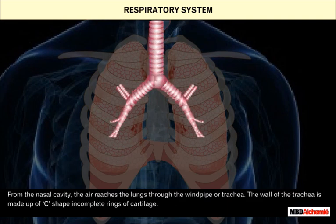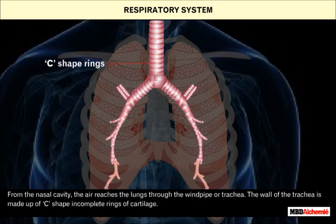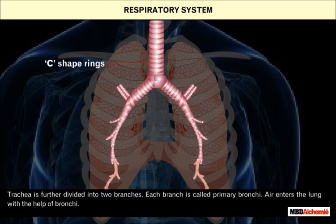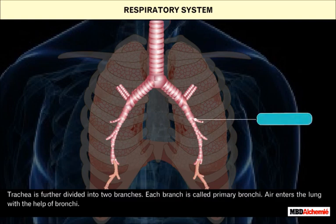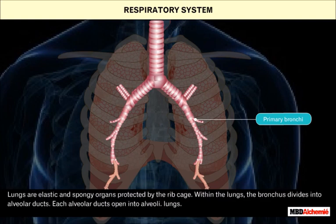The wall of the trachea is made up of C-shaped incomplete rings of cartilage. The trachea is further divided into two branches; each branch is called a primary bronchus. Air enters the lungs with the help of the bronchi.